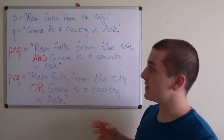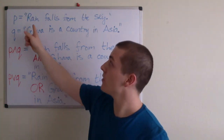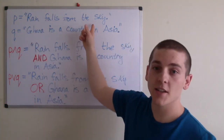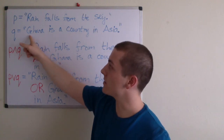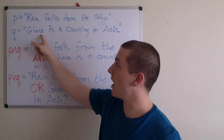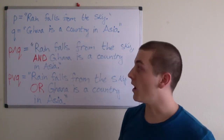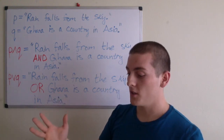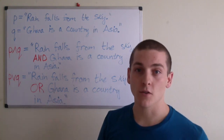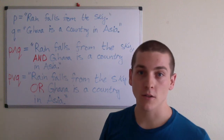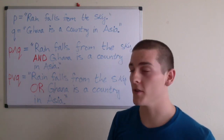This has a verifiable truth value because 'rain falls from the sky' is a true statement. But statement Q, 'Ghana is a country in Asia,' is false. So we have P and Q — true and false — which means the conjunction is false, because one of them is false. We'll talk about this more when we get into truth tables.